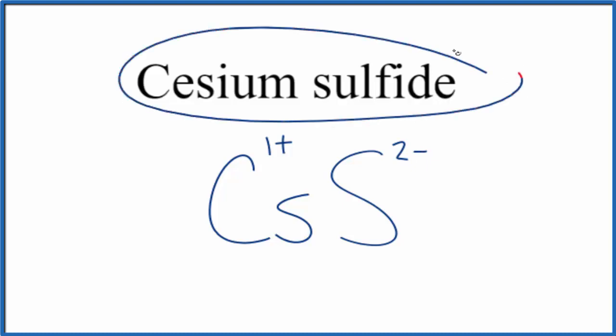So because this is neutral, it doesn't say ion after it, we need to have these charges here add up to 0, give us a net charge of 0. Right now they don't.